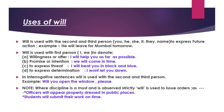Will is also used to express a threat, to express determination — like 'I won't let you down,' which is a determination — and 'I will be successful in whatever task I am given.' However, note that in interrogative sentences, 'will' is used with the second and third person, not with 'I' or 'we'. Example: 'Will you open the window please?' Also, wherever discipline is required, we use 'will' — like 'Students will submit their homework on time' or 'Officers will appear properly dressed in public places.'